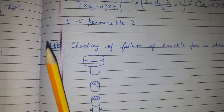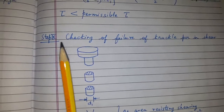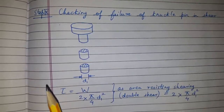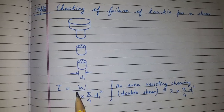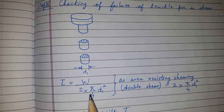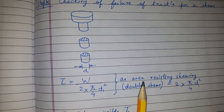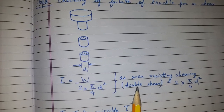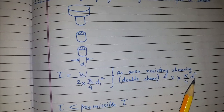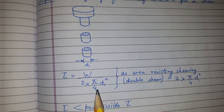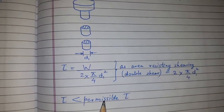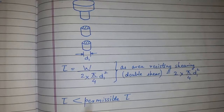Step 9: we again check the failure of the knuckle pin in shear. Shear stress is equal to load upon the resisting area. The area resisting double shear is 2 × (π/4) × d1². Once we get the shear stress, we check whether it is less than the permissible stress.